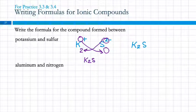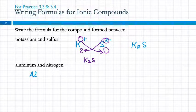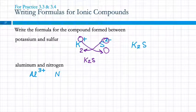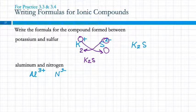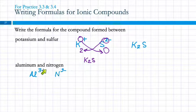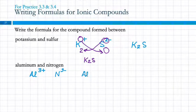Let's do another one: aluminum and nitrogen. Aluminum's symbol is Al — it's a metal. What's the charge? Plus three, because it's in Group 3A of the main group. Nitrogen is N, and its charge is negative three, written as 3−. Once we have the ions with their charges, we figure out how to combine them. Here, plus three and minus three are the same magnitude, so we just push them together: AlN. If the numbers are the same, don't crisscross — you won't get the lowest ratio.